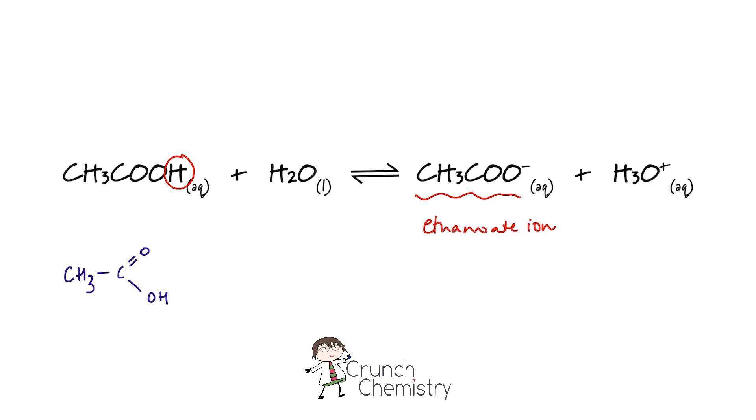When ethanoic acid reacts with water, the name of our carboxylate ion is the ethanoate ion and we can think of the ethanoate ion as the conjugate base to the original acid.